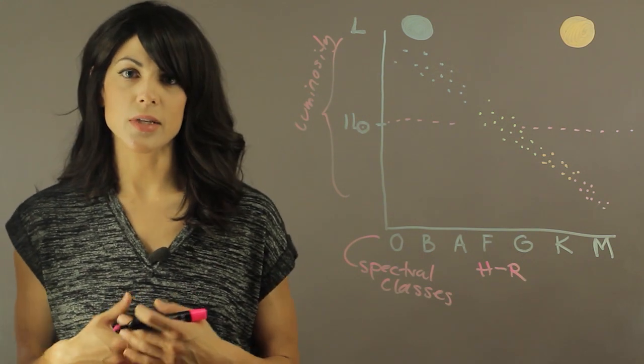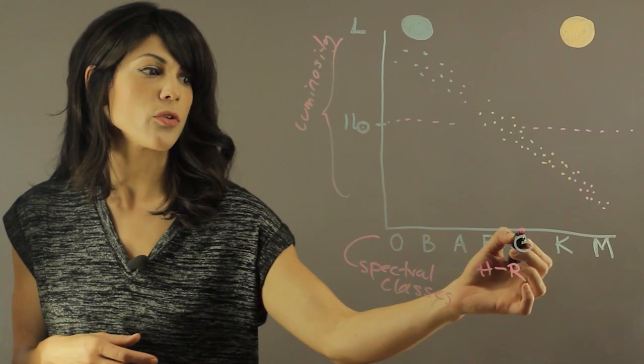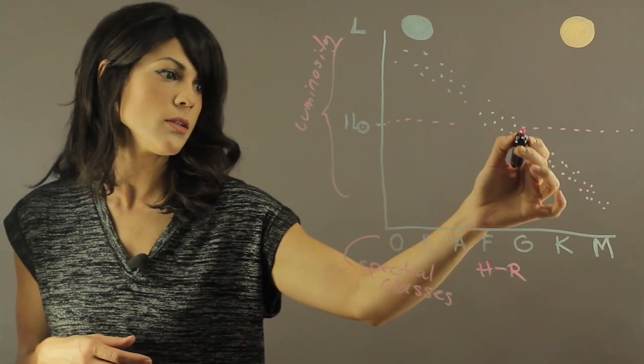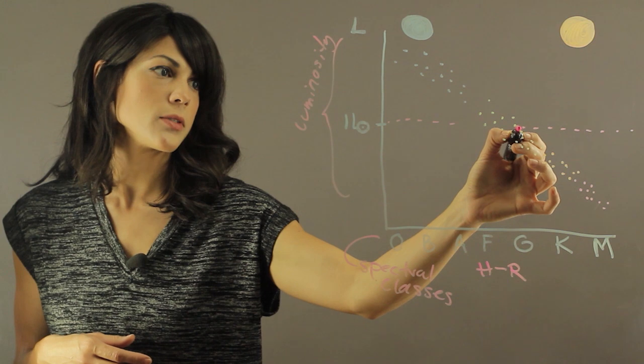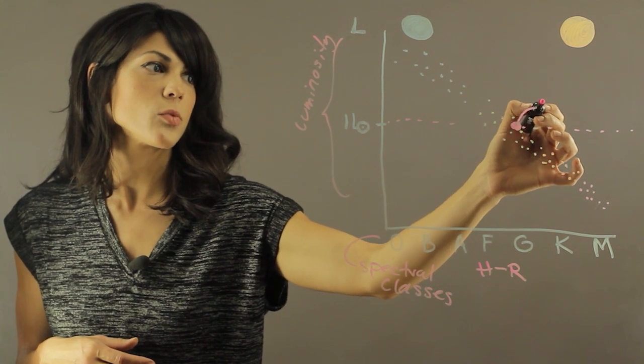But our Sun is actually a G2 class star. So if you come to G and find the luminosity of the Sun, it will be somewhere around here. So this is where our Sun will be.